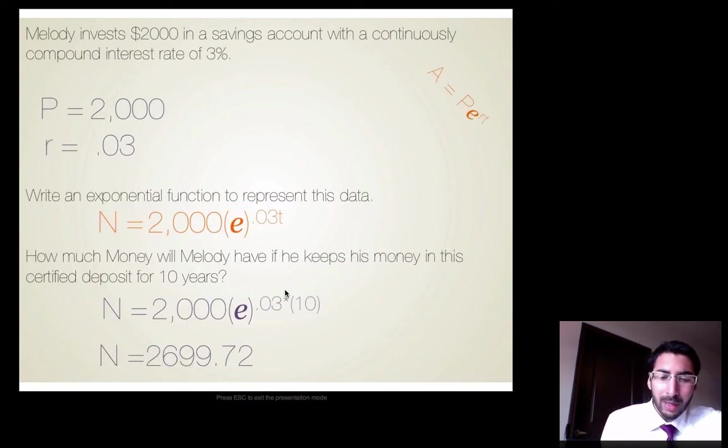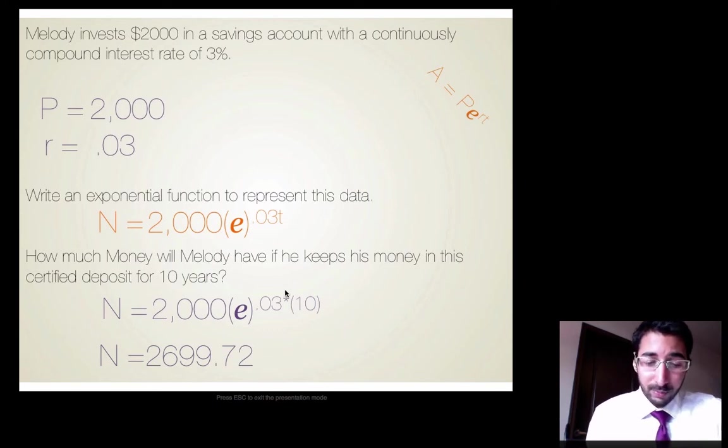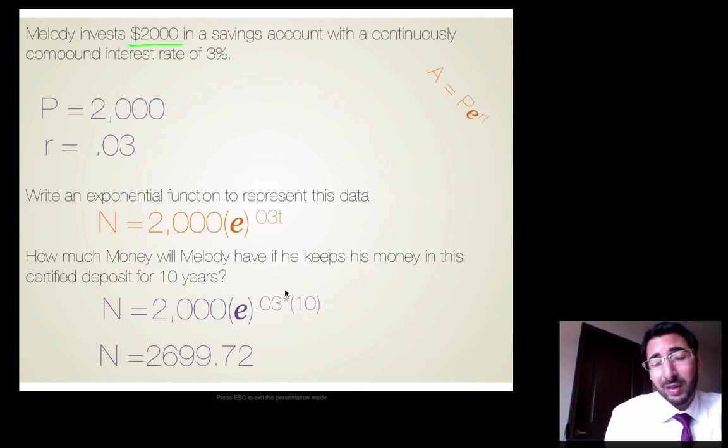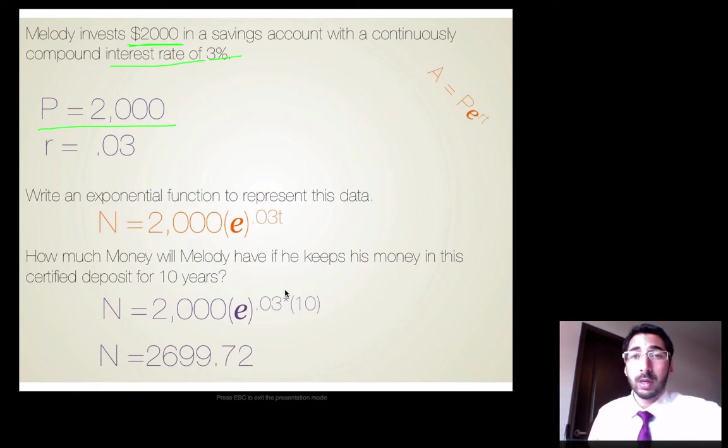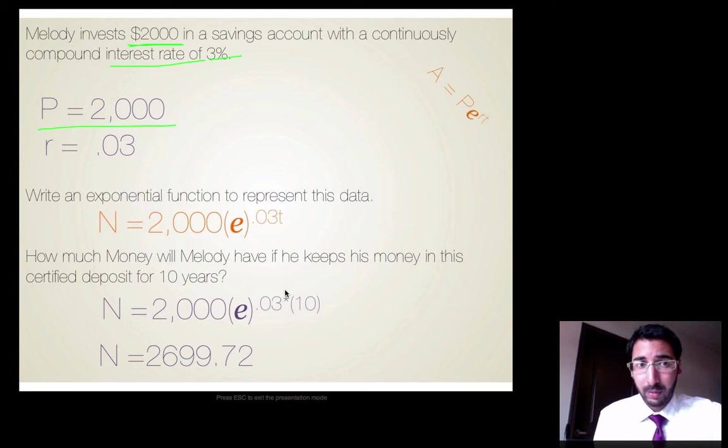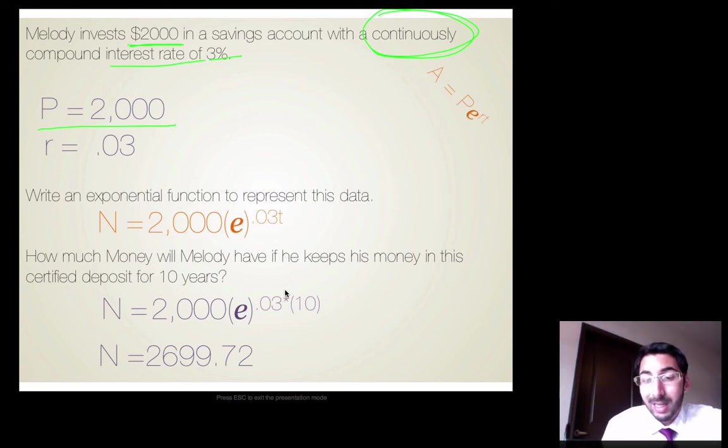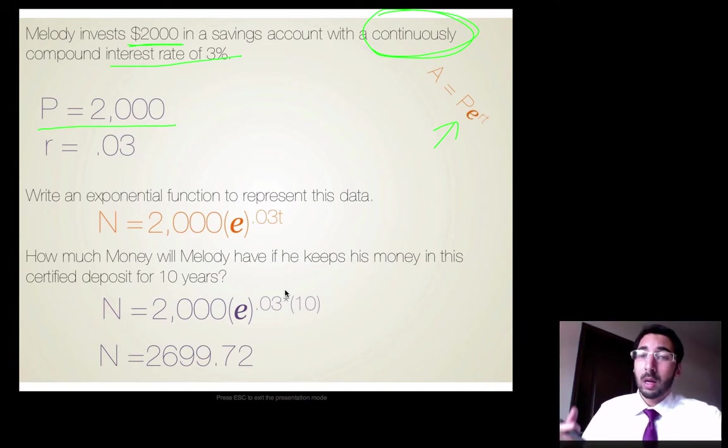So Melody invests $2,000 in a savings account with a continuously compound interest rate of 3%. So we first need to identify my P. So I see $2,000. That's what she initially invests. So that's going to be my principal payment. So my principal payment is going to be the amount of $2,000. My rate, well it tells me that it's an interest rate of 3%. So remember you always have to convert your interest rate. It's going to be converted to .03. Now, it tells me that it's being compounded, but it says continuously. So that tells me immediately, I'm going to use that formula right there. I'm going to use E. As soon as I see continuously, that's an indication in my head, I'm going to be using E.